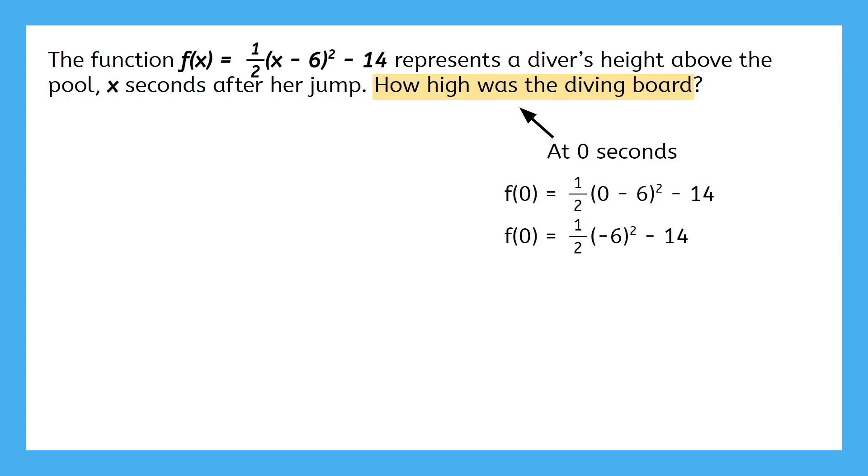0 minus 6 is negative 6, and negative 6 squared is 36. Multiply that by 1/2 to get 18, and 18 minus 14 is 4. So 0 seconds into the dive, meaning before the dive actually happened, the diver was standing on a 4 foot high diving board.